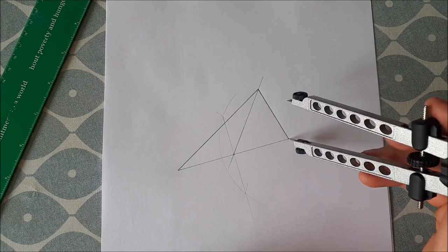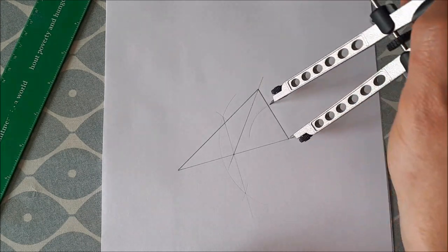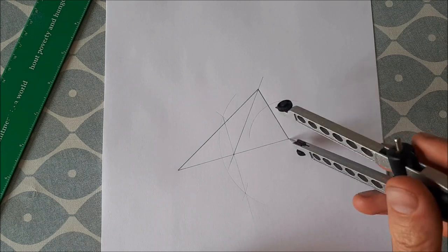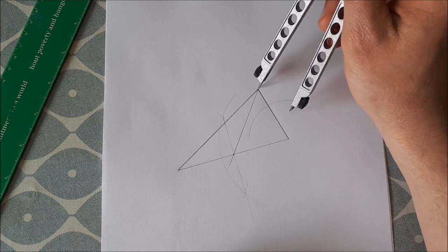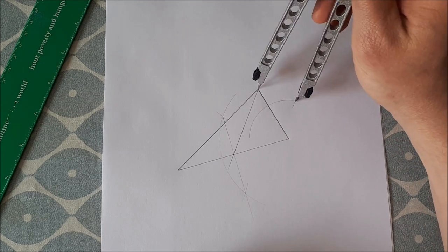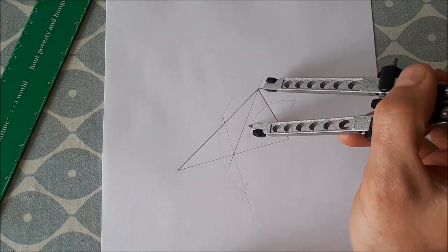Put the tip of your compass on the vertex and we scribe an arc. Move the tip of your compass to the other vertex and scribe an arc here and scribe an arc here.